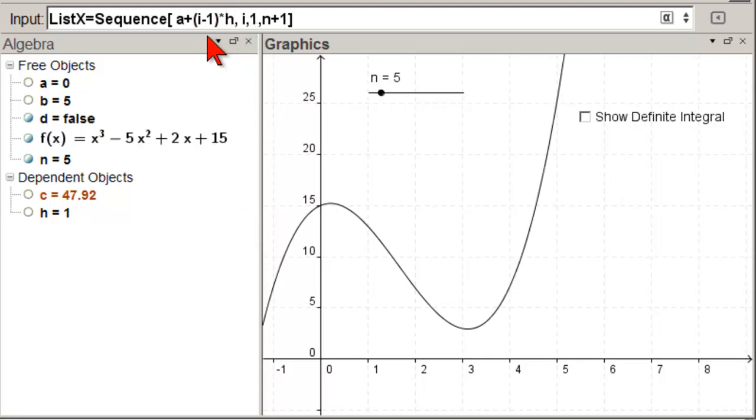Let's check it. If I equals 1, this becomes 0, so we get A. And if I equals N plus 1, this is N plus 1 minus 1, N times H. That's B. We're good to go. We'll check it. So we got from 0 to 5. Excellent. There's our list.